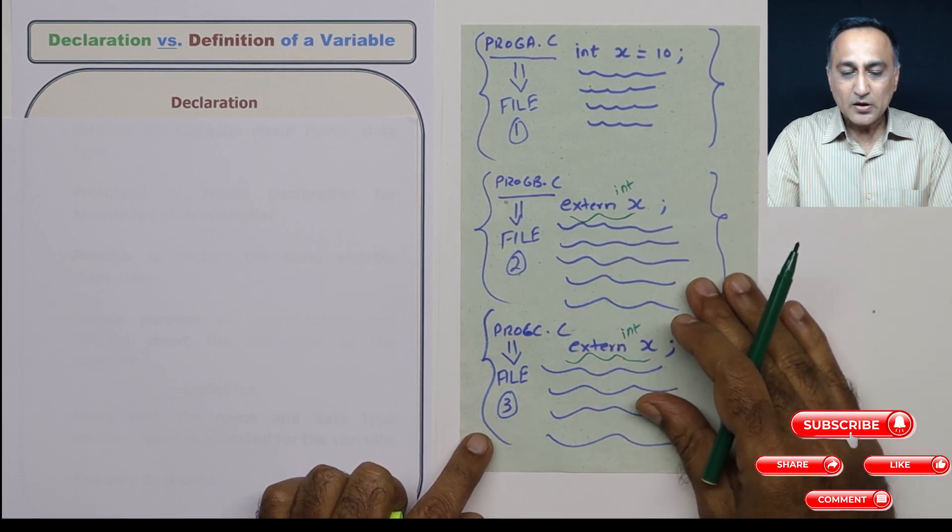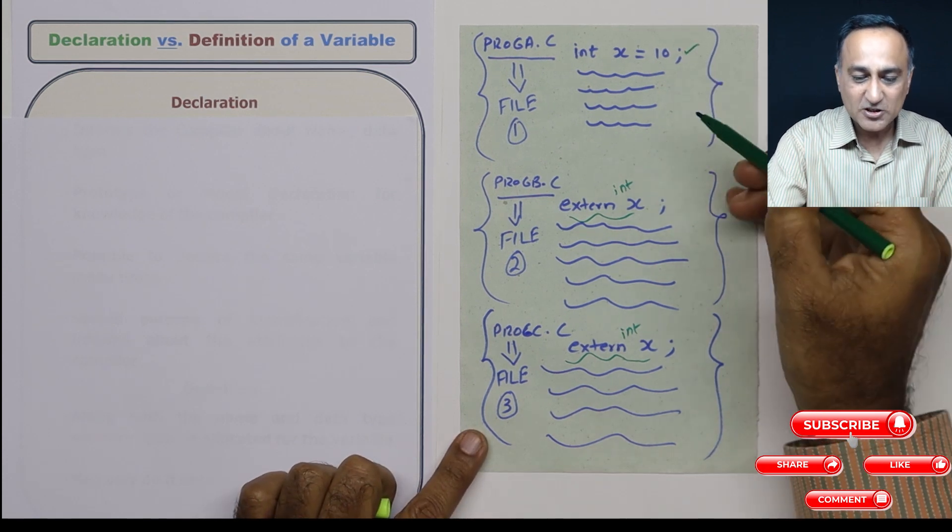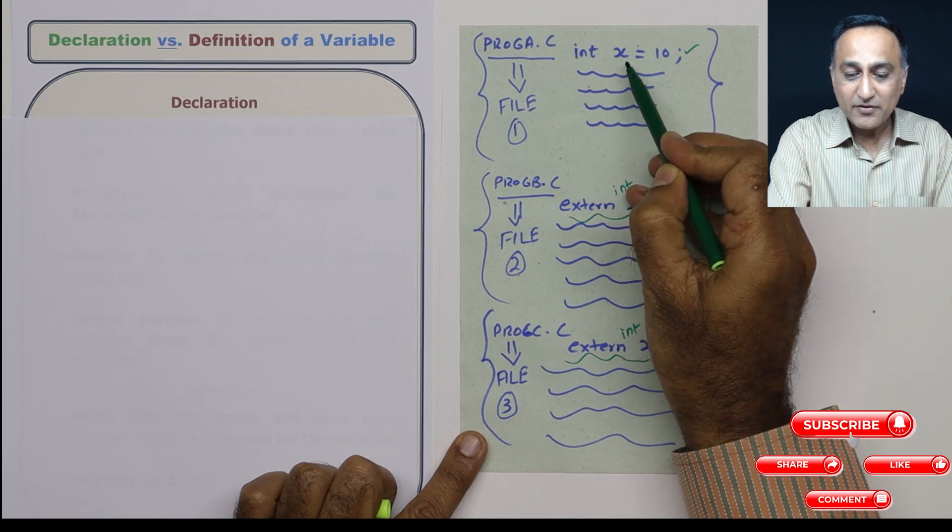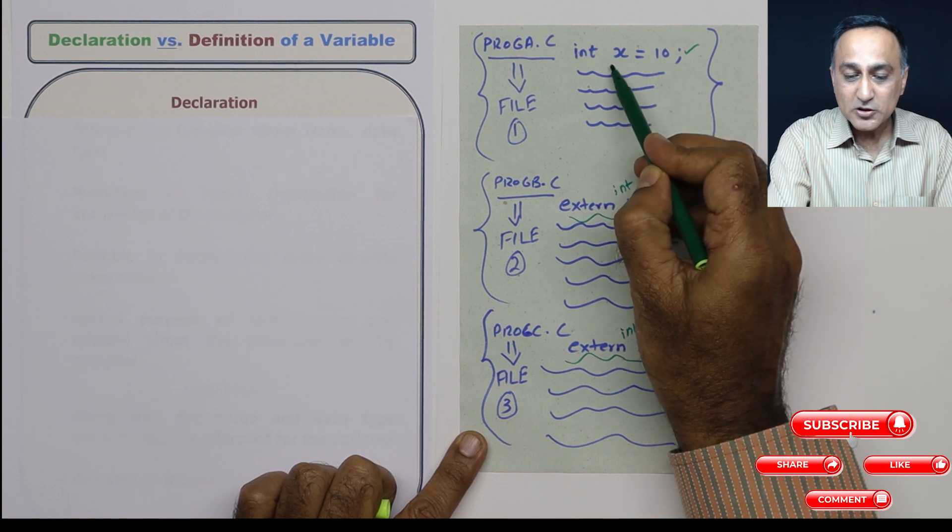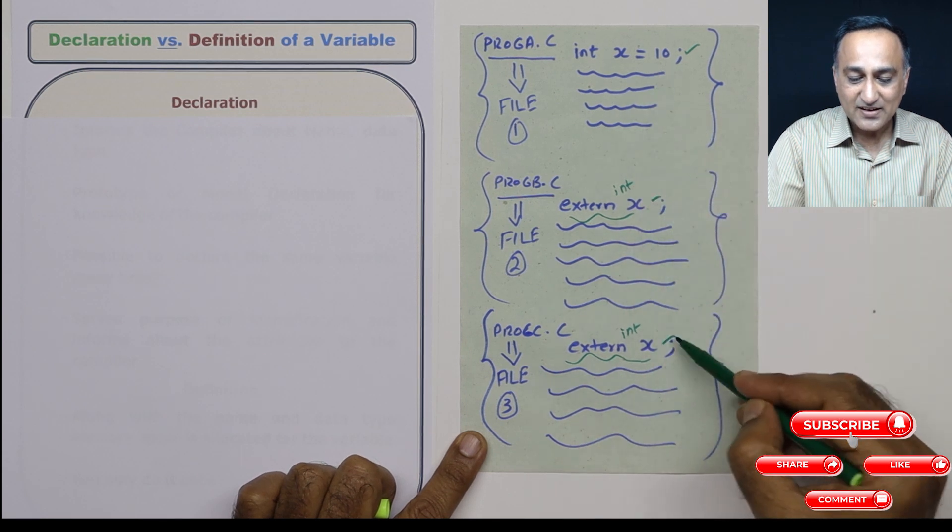So what happens in definition and declaration is this is the definition. In definition, I am not only declaring a variable x of the type integer giving it the initial value 10, storage space for x is allocated in the definition, whereas here and here,